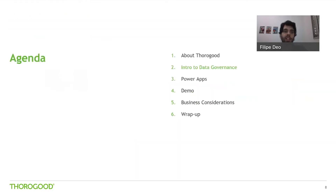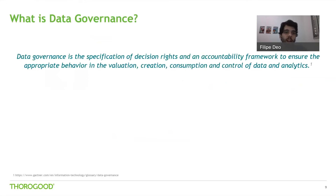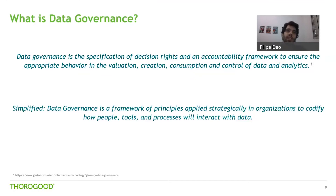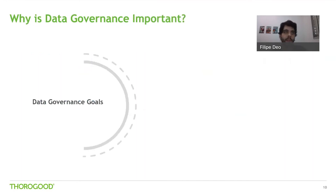Moving on to data governance. According to Gartner, data governance is the specification of decision rights in an accountability framework to ensure appropriate behavior in the valuation, creation, consumption and control of data and analytics. In a more simplified manner, data governance is a framework of principles applied strategically in organizations to codify how people, tools and processes will interact with data.